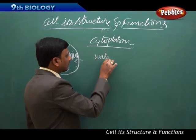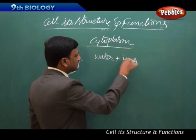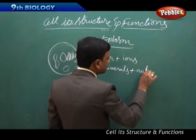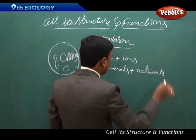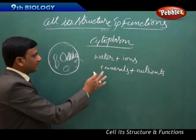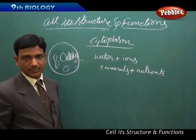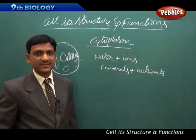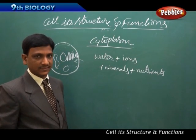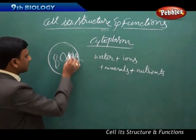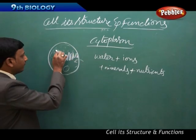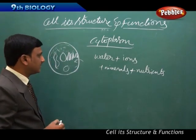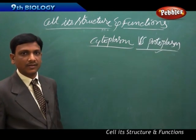Cytoplasm is basically composed of water, ions, minerals, and other nutrients like carbohydrates and amino acids. These are the different things that make up the cytoplasm. The cytoplasm is a medium that provides nutrients and nourishment to the different cell organelles present inside the cell.